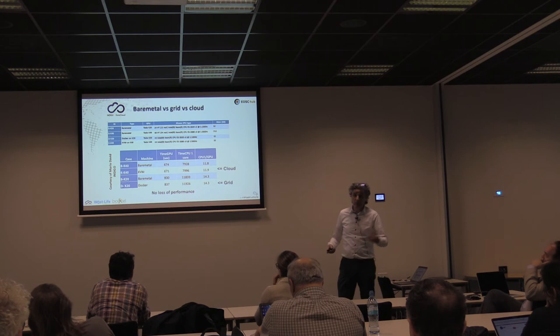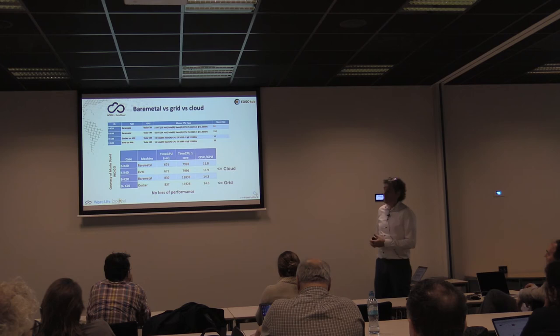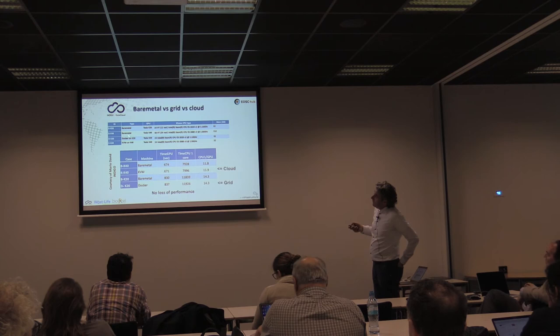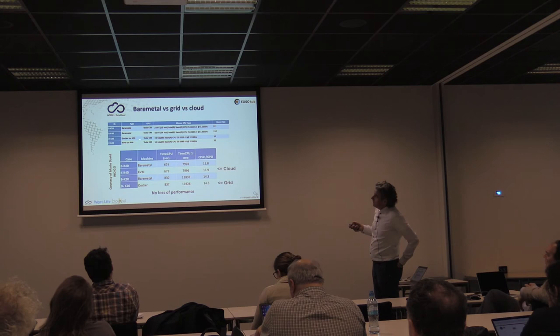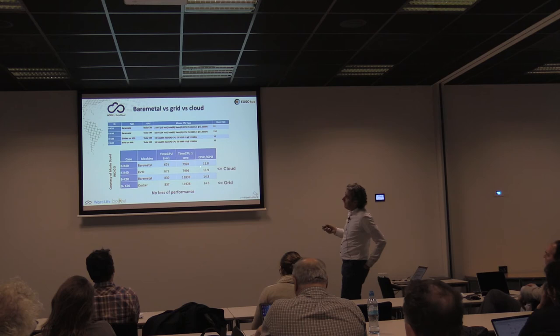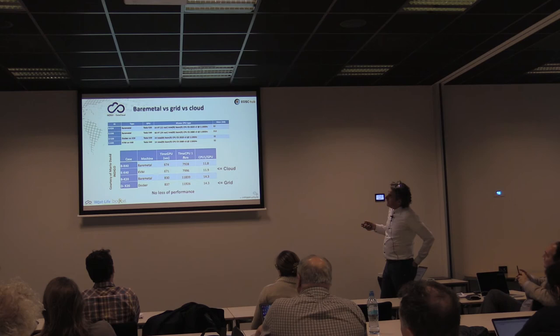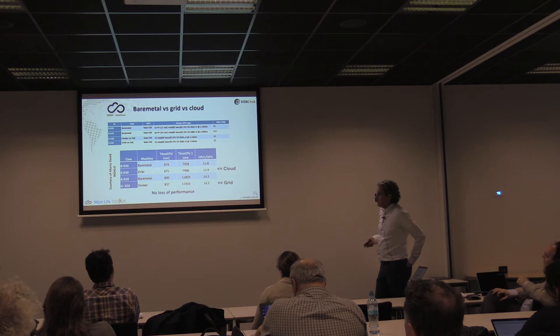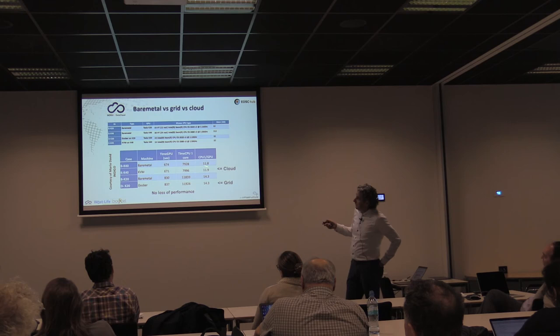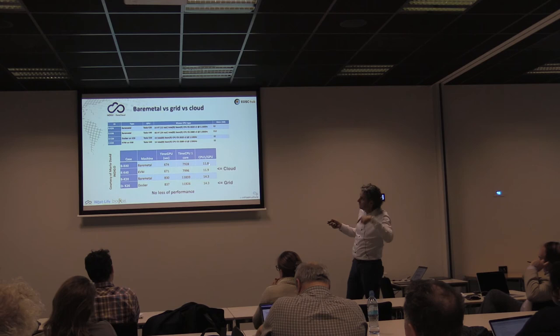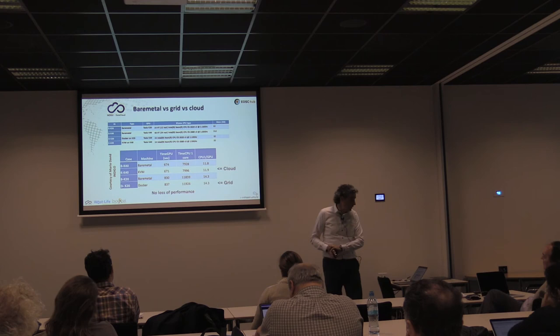Do you take a hit in performance by using containers to access GPUs on the grid? We tested on bare metal, using Docker containers, and on cloud systems across different GPU cards. The timing shows the CPU-to-GPU comparison in terms of speedup. The first two lines represent cloud — and you basically don't lose anything by running on the cloud. Accessing the GPU through a cloud VM or through Docker containers on the grid gives the same performance. We don't take a hit, and that's a good thing.